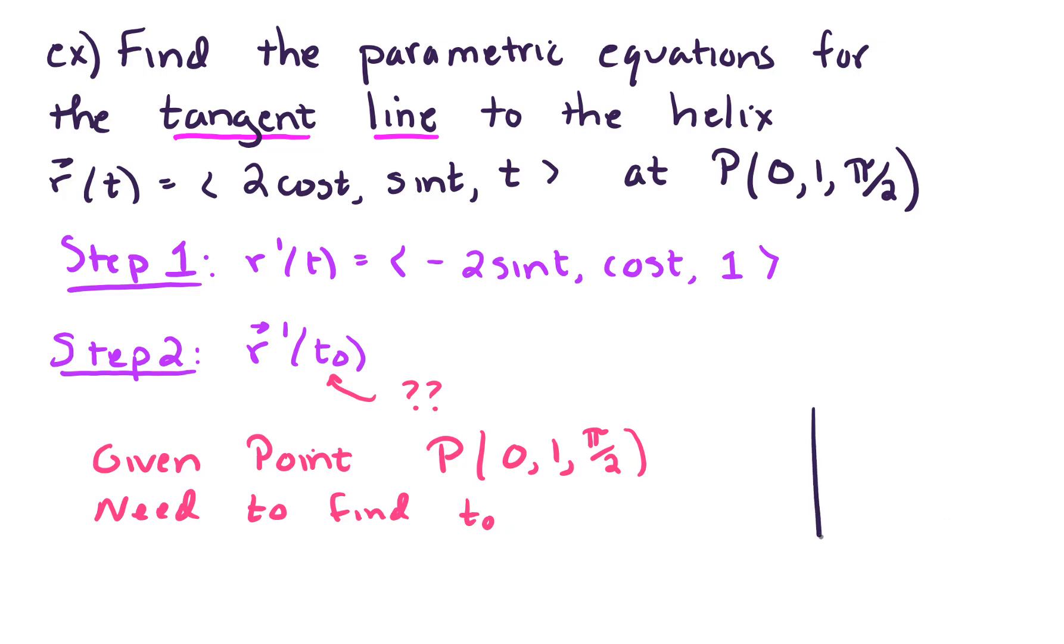Alright, so here's the picture. We've got our 3D coordinate system. So there's the x, there's the y, and there's the z. And our helix is doing something like this. It's going out and around and around, up it goes as time goes by. And we want to know what time, essentially what time is it or what t value is it when we've reached this point over 0, up 1, pi over 2. What is t at that point?